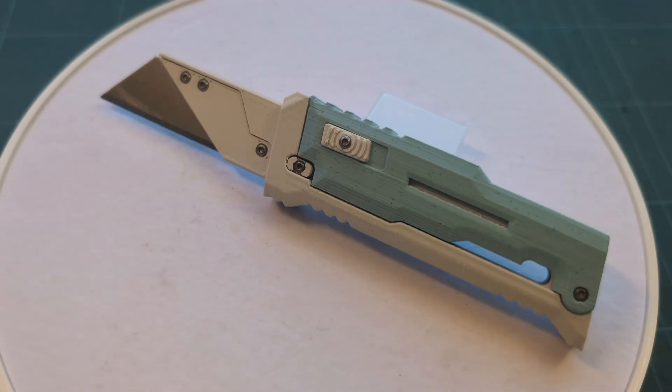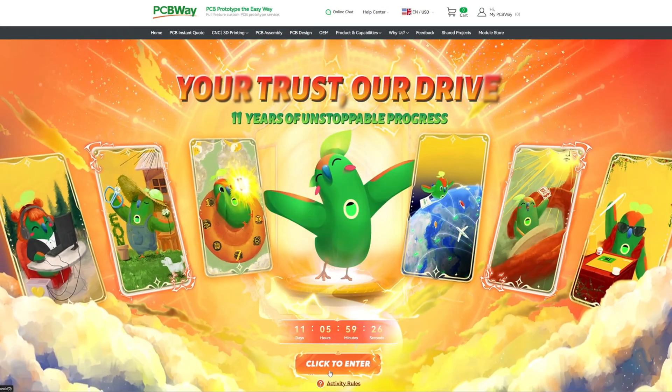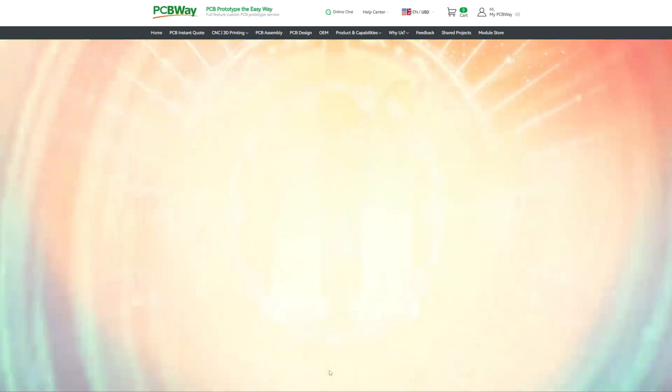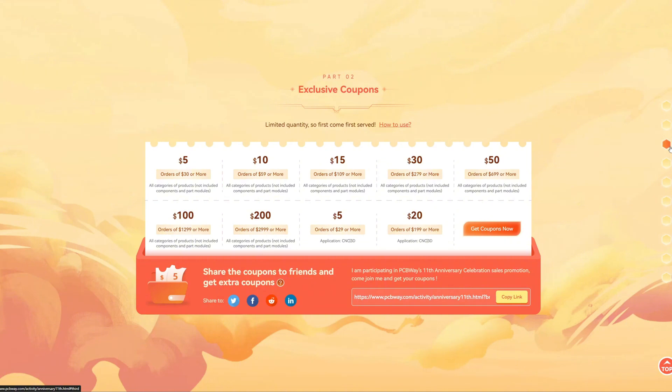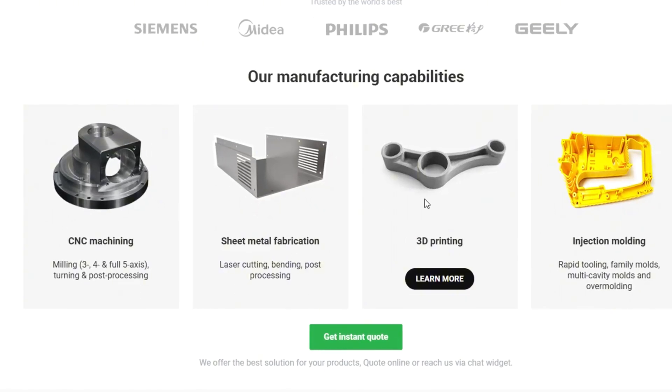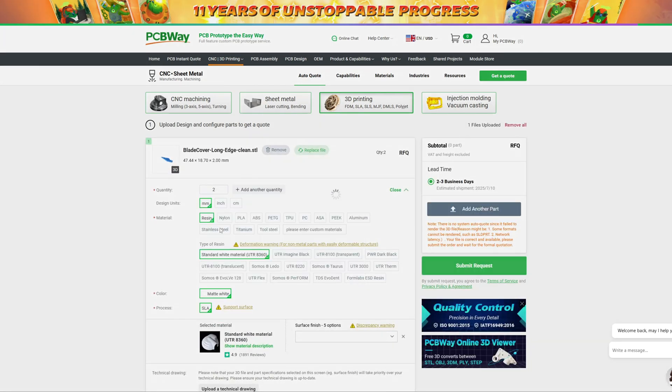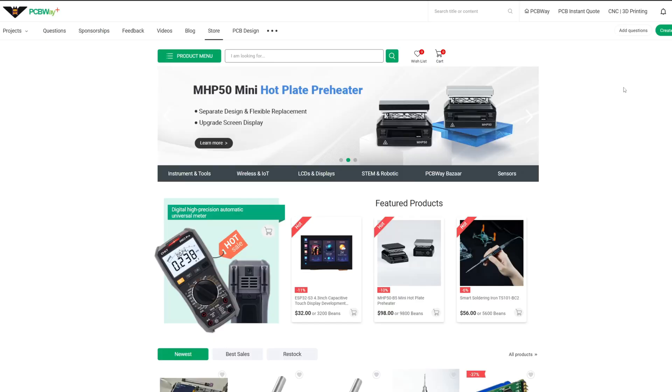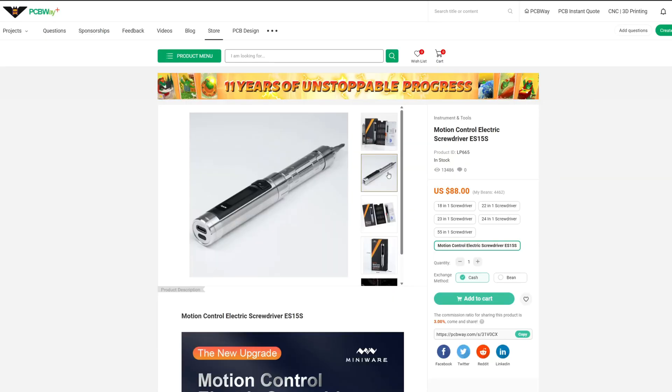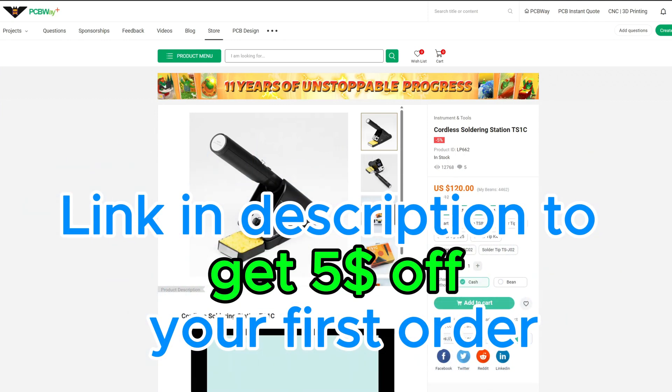And before we start building, a quick shoutout to the sponsor of this video, PCBWay.com, who have their 11th anniversary and have a lot of discounts and coupon codes at the moment. In addition to customized PCBs, they offer CNC milling, sheet metal fabrication, 3D printing and injection molding. On their site you can easily upload your drawing and get an instant quote. And if you need high quality tools, you can also find things in their store, like this motion controlled electric screwdriver or this temperature controlled cordless soldering iron, which I got myself and which you often see in my videos. And with the link in the description you can also get an additional $5 off your first order.